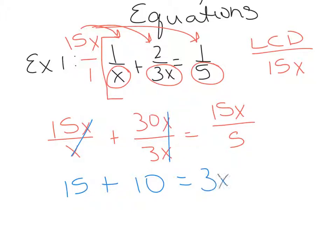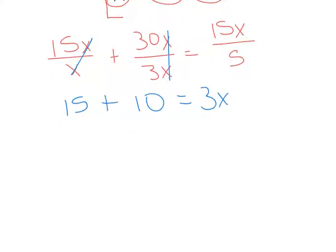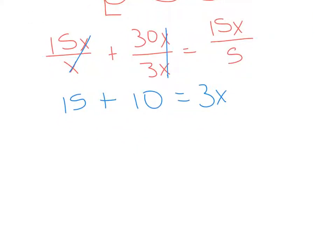So this becomes 3x. And now instead of having this complicated equation with fractions in it, we have this equivalent equation with all whole numbers. I'm going to assume that you guys know the next few steps: combine like terms, isolate the x. So this becomes 25 equals 3x. Divide off that 3. We have x equals 25 over 3.